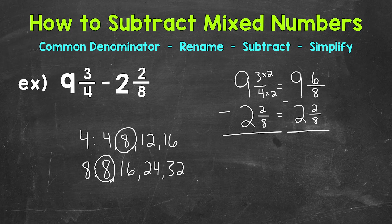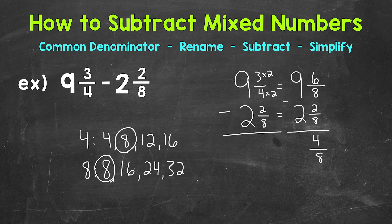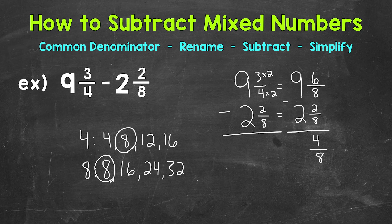So let's subtract the fractions of these mixed numbers. So 6 eighths minus 2 eighths. Subtract the numerators, 6 minus 2. That gives us 4. And then we keep our common denominator of 8. Once we have that, we can subtract the whole numbers. So 9 minus 2 gives us 7.